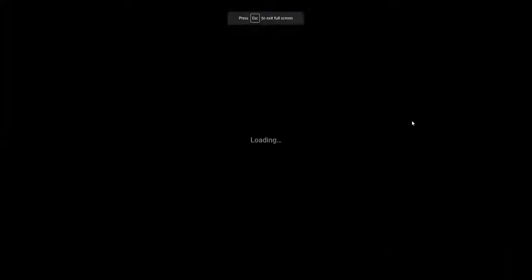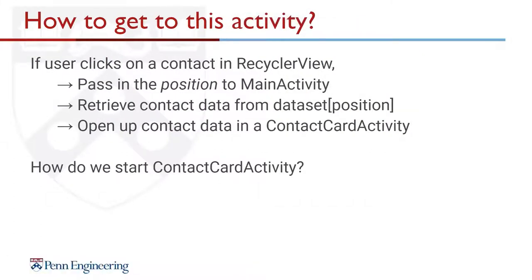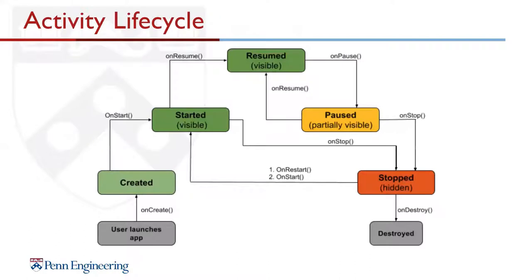So how do we get to this new ContactCardActivity? When the user clicks a contact in RecyclerView, we extract the position and pass it to MainActivity. Inside MainActivity, we retrieve the contact data from the data set and open ContactCardActivity while passing in the contact data.